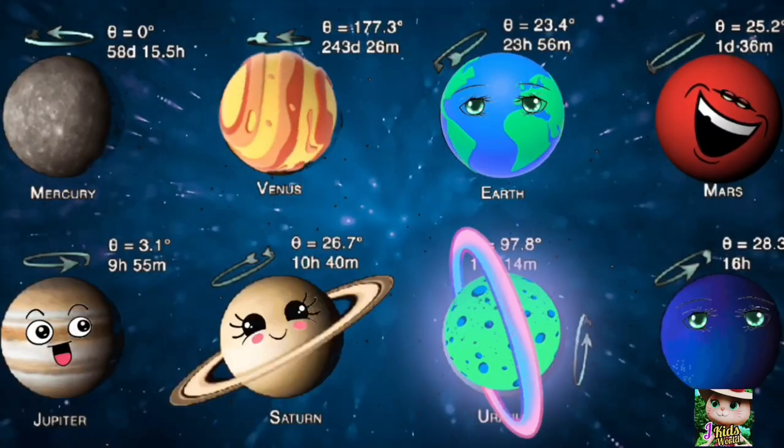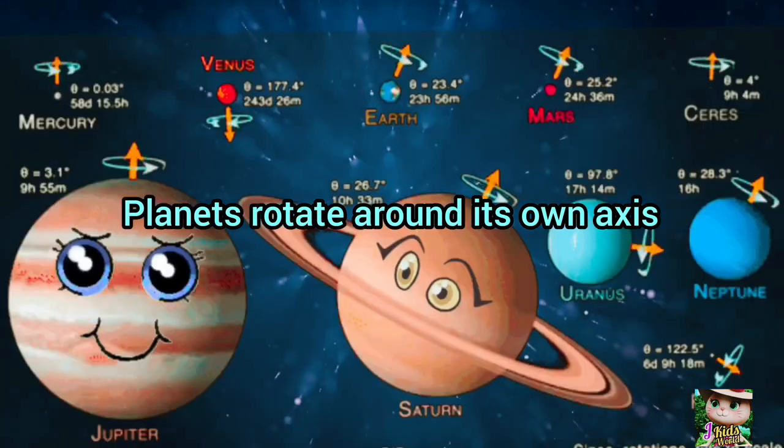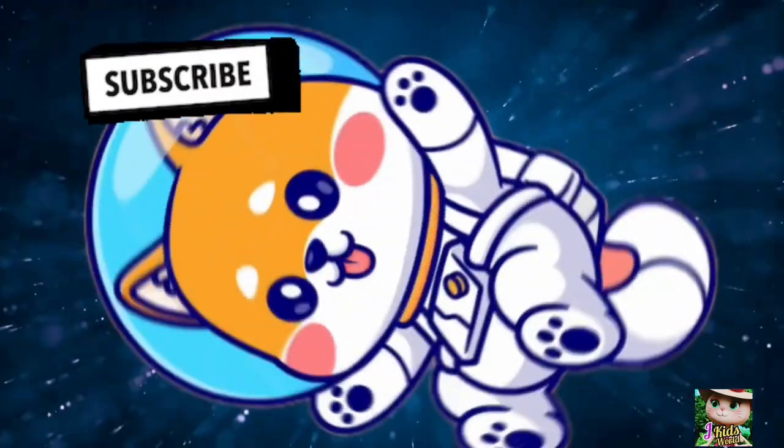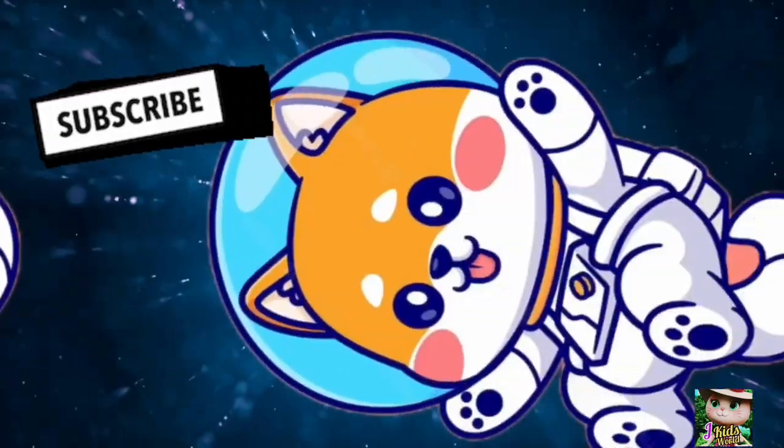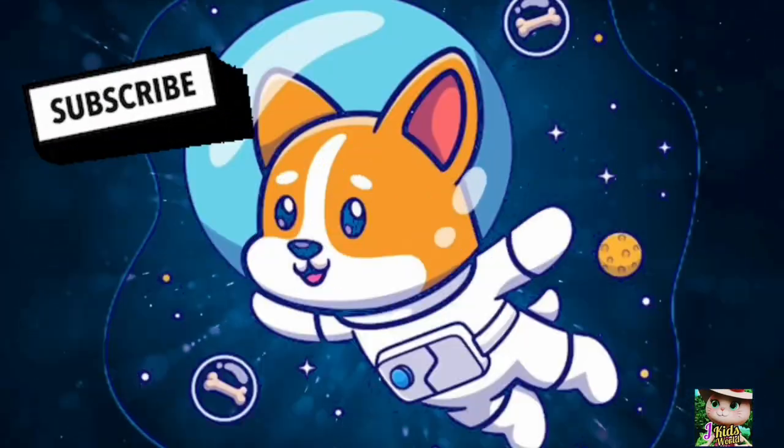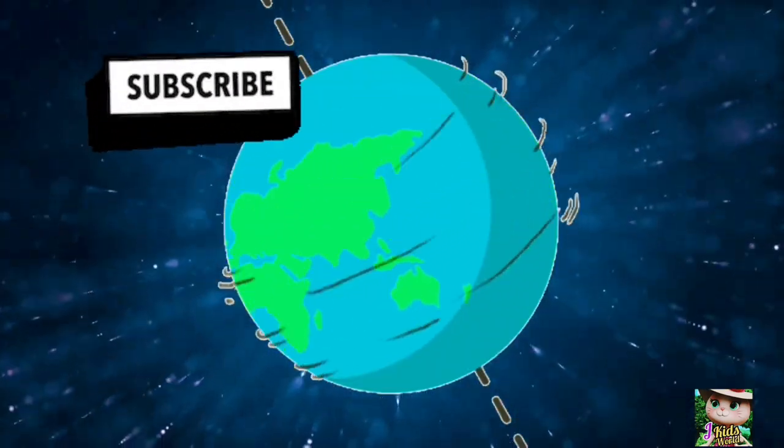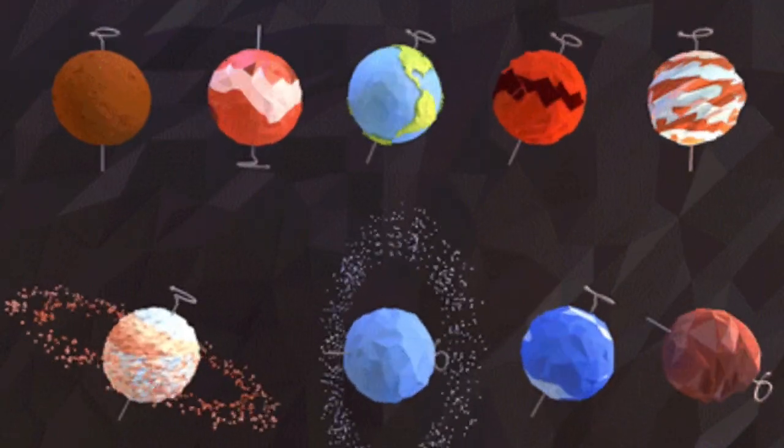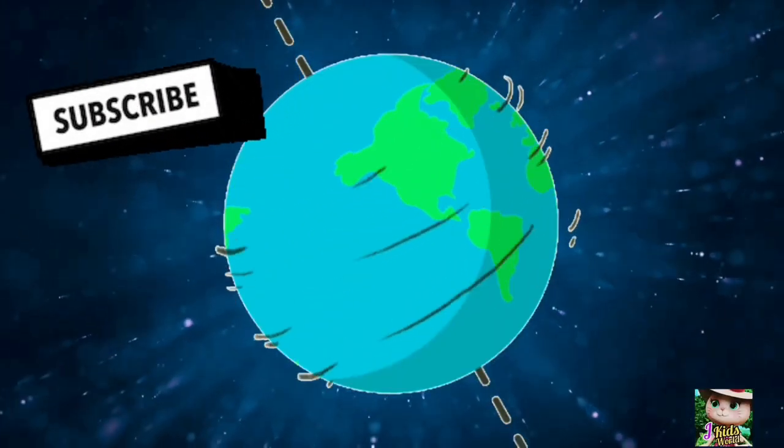Planets revolve around their own axes. What is rotation? Rotation is a circular movement of an object around a center of rotation.